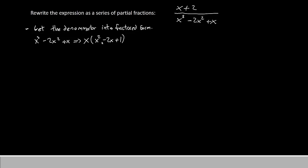Let's think about could we factor this any further. You might recognize this pattern: x squared minus 2x plus 1 can be factored into x minus 1 times x minus 1. We should write that as x times x minus 1 to the second power because we've written it twice.